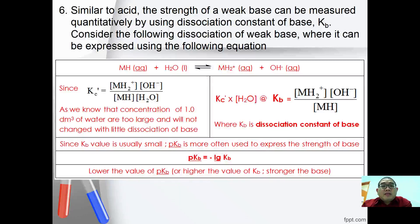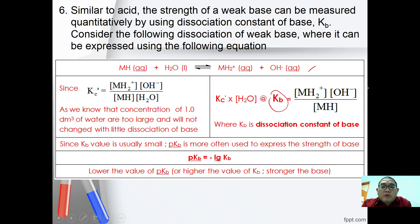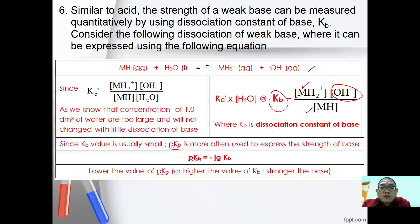Similar to Ka for acids, the strength of a weak base can be measured quantitatively using Kb. Consider the equation: MH + H₂O ⇌ MH₂⁺ + OH⁻. Kb = [MH₂⁺][OH⁻] / [MH], where Kb is the dissociation constant of the base. Since Kb values are usually very small, pKb = −log(Kb) is often used. The lower the value of pKb, the stronger the base.